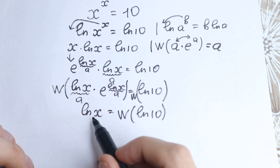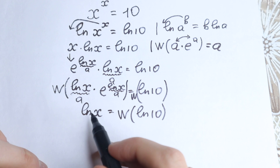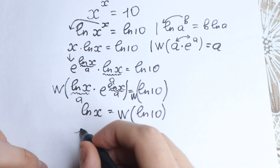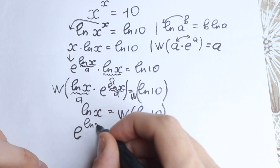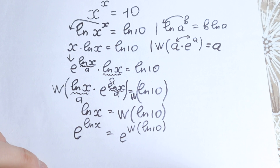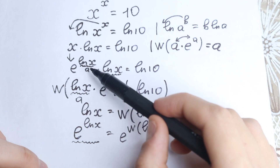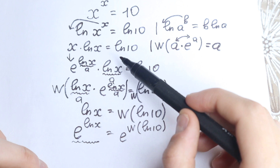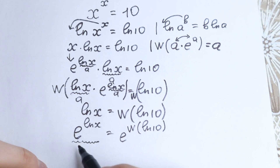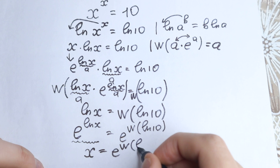We can easily express this in another way because we need only our x, our solution. The trick is to create base e on both sides: e to the power natural log x equals e to the power Lambert W function of natural log 10. Going back to the rule that x equals e to the power natural log x, this rule works in reverse — so the left side simply becomes x, giving us x equal to e to the power Lambert W function of natural log 10.